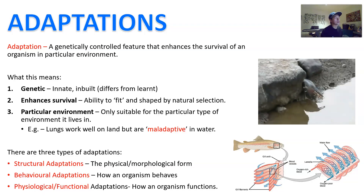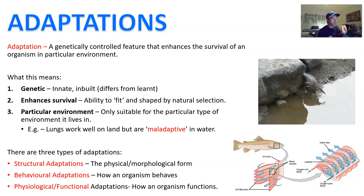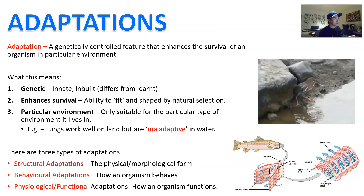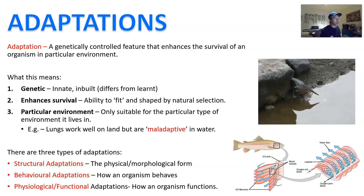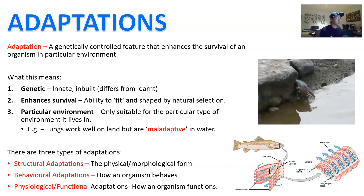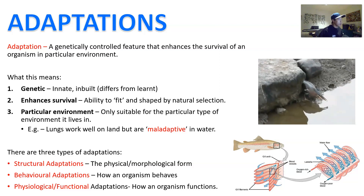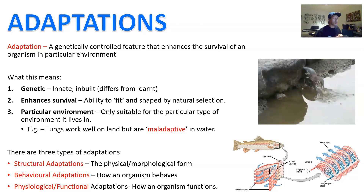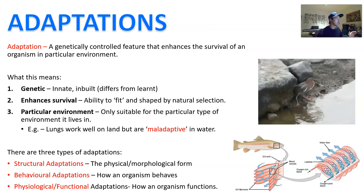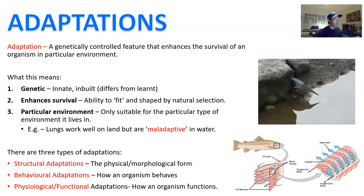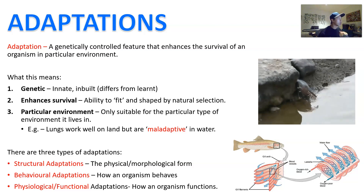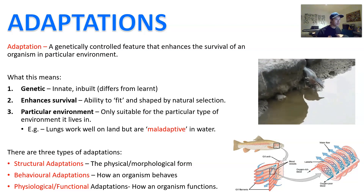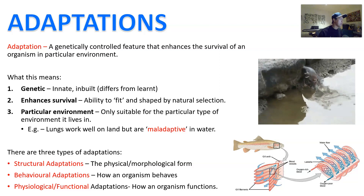So what do we mean by adaptation? An adaptation is a genetically controlled feature that is going to enhance the survival of an organism in a particular environment. When we are talking about adaptations, we are talking about something that is genetic — it is genetically controlled, meaning that it's innate or inbuilt, which is different from a learned behavior.